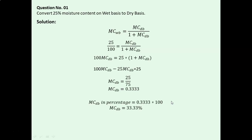So the final answer is MCDB equals 33.33%.